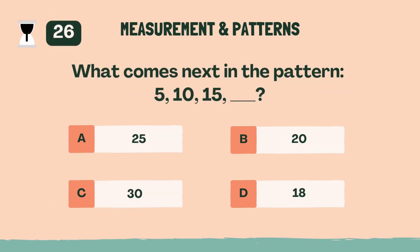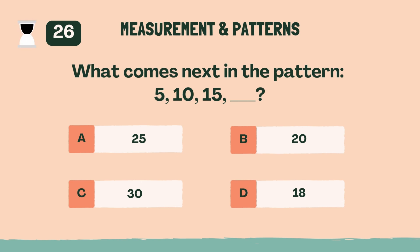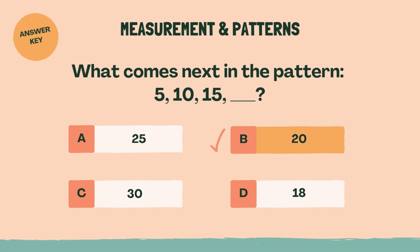What comes next in the pattern: 5, 10, 15? The answer is B, 20.